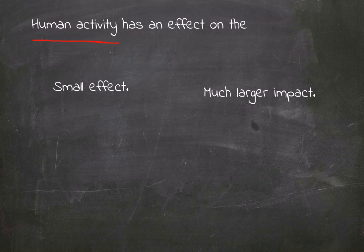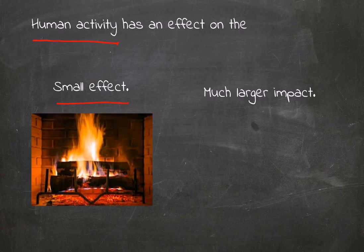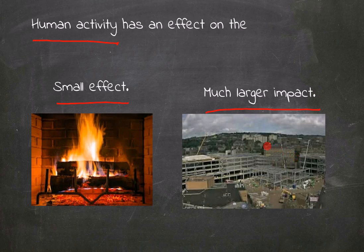Any human activity has an effect on the environment, and there are two types of negative effects. The first one is a small effect. For example, collecting branches for your fireplace. Others have a much larger impact. For example, the construction of a shopping center.